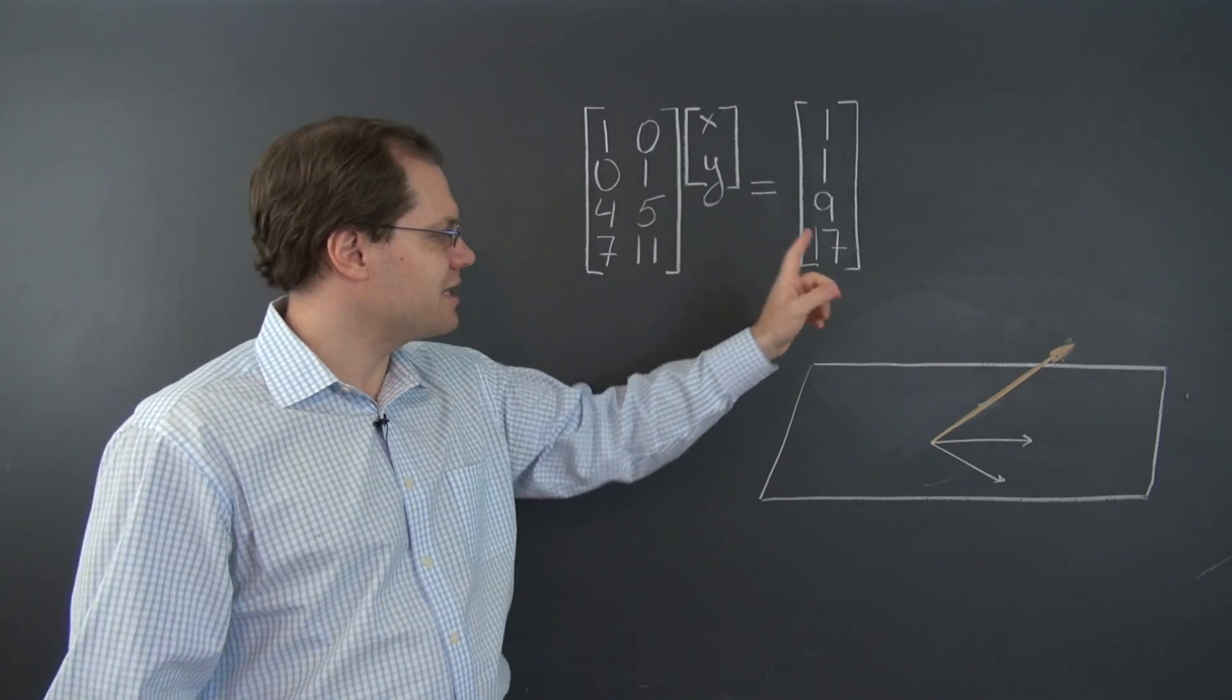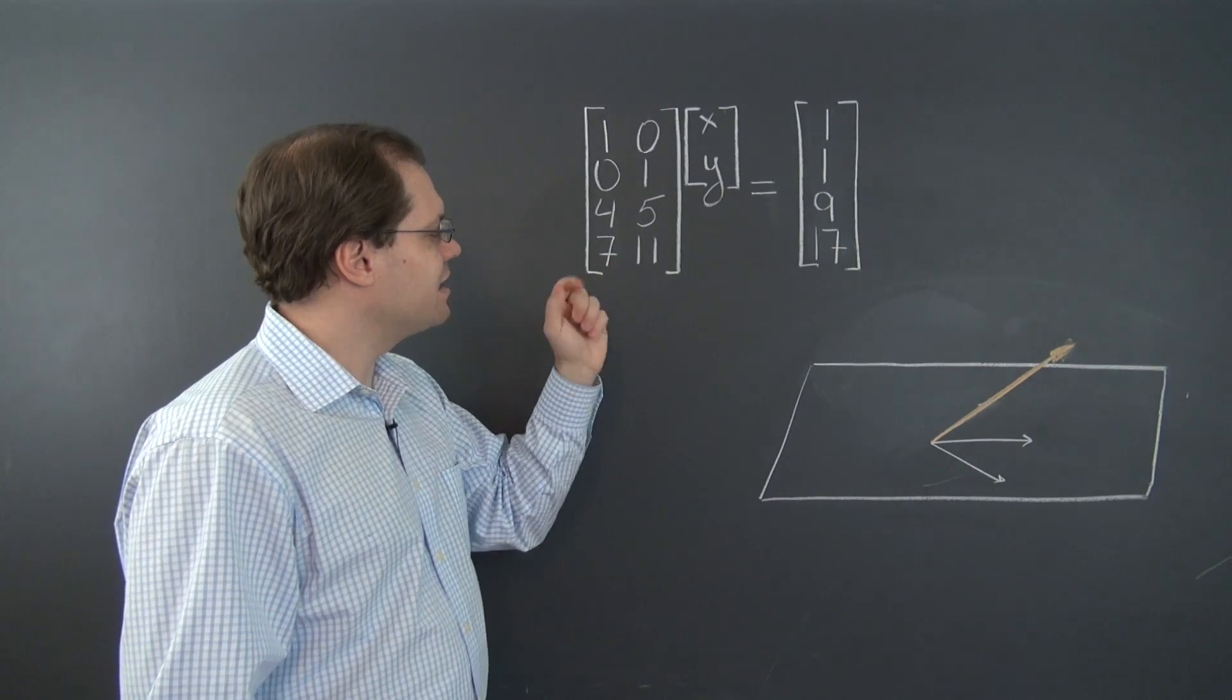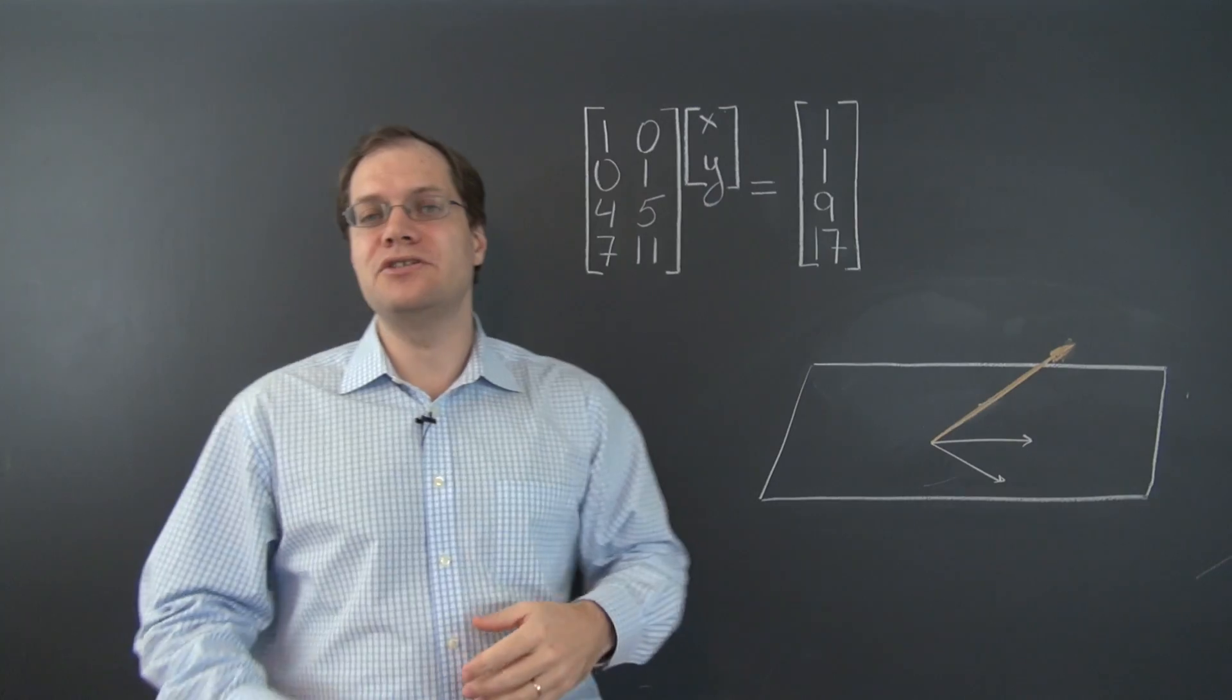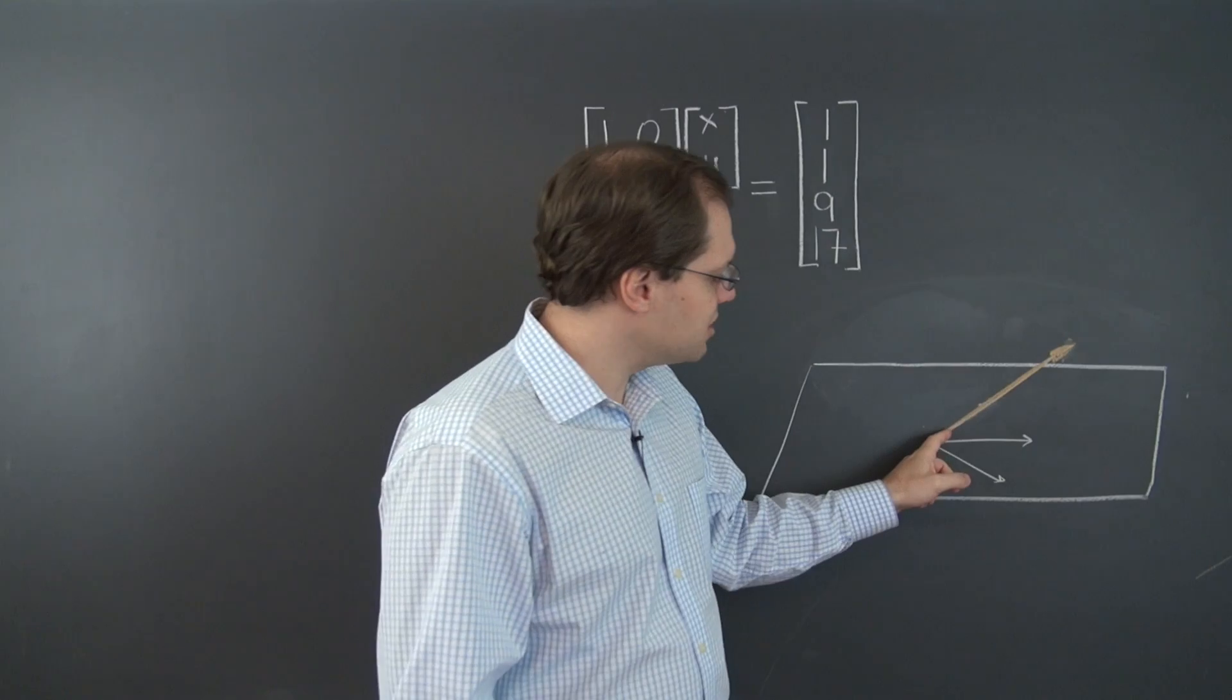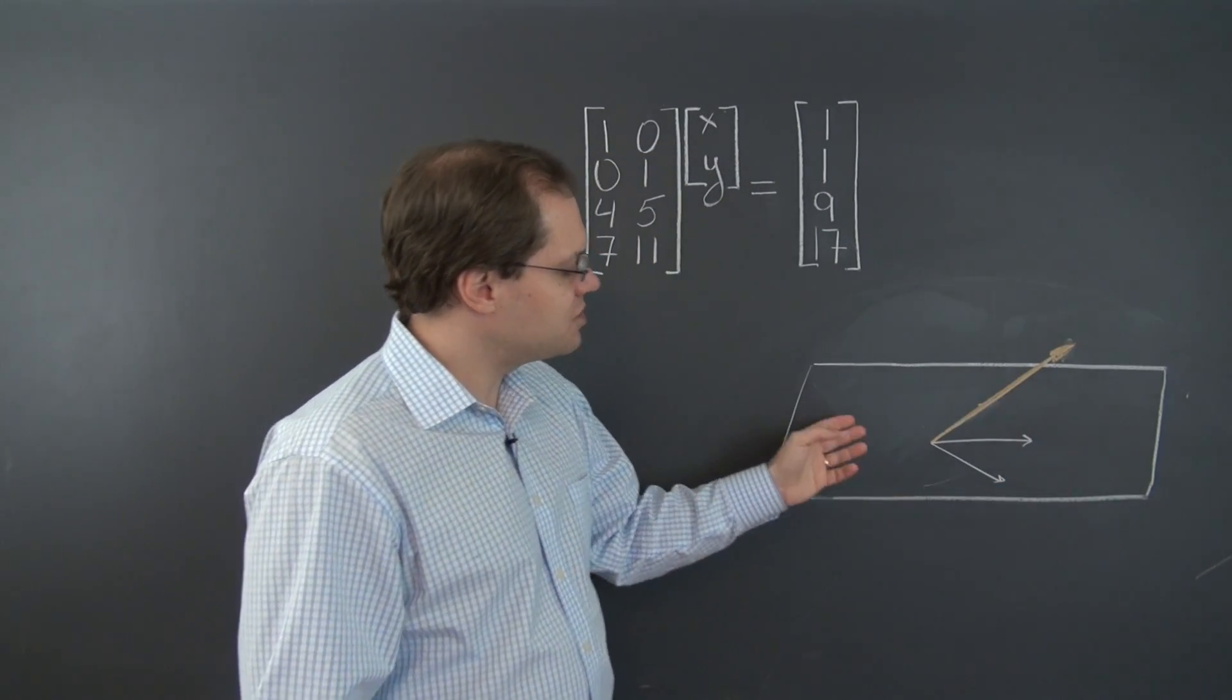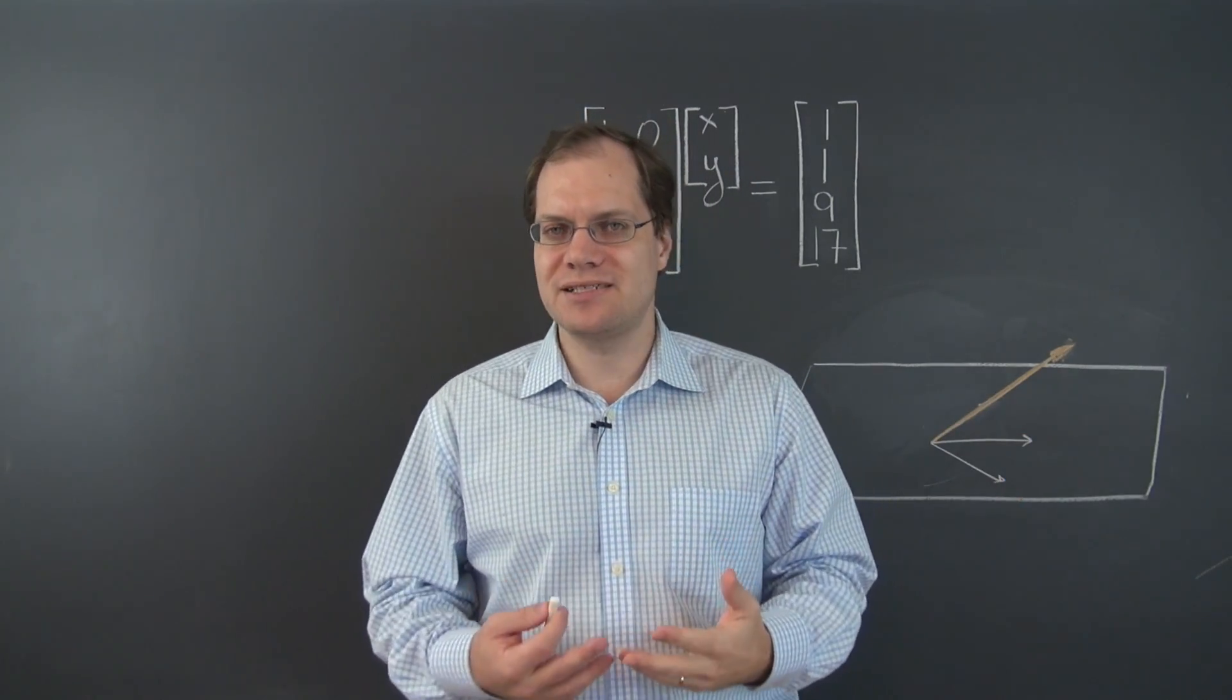In other words, the right-hand side is not in the column space of this matrix. It is not within the span of these two columns. So by geometric analogy, asking to solve this system is like asking to decompose this vector, which is not in this plane, with respect to a pair of vectors in the plane. And of course, that's not possible.